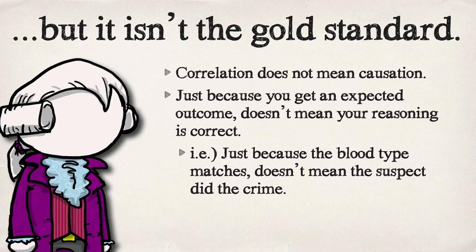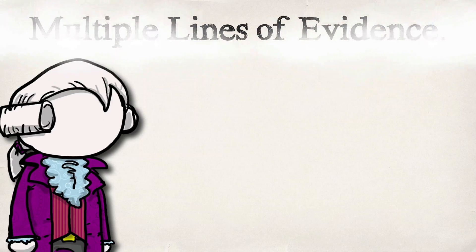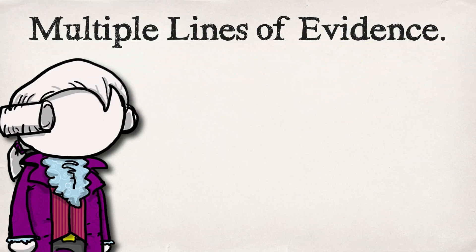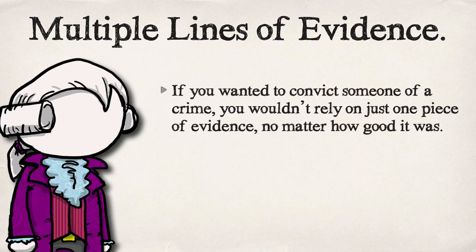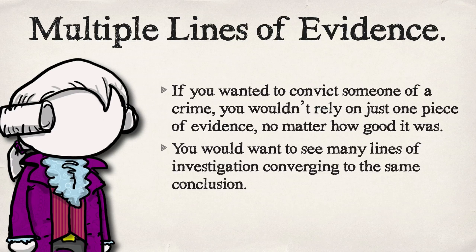If you think somebody committed a crime and their blood type matches what's found at the scene of the crime, you haven't convicted them of a crime. That's just one piece of evidence. What you'd want is a lot of pieces of evidence, and that's what multiple lines of evidence are — finding a lot of different pieces of evidence from different fields of study that all tie that person to the crime. We do the same thing in science.